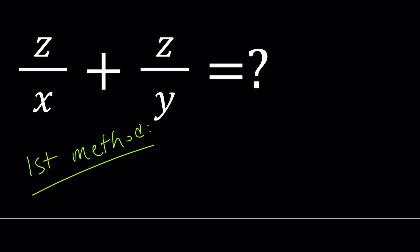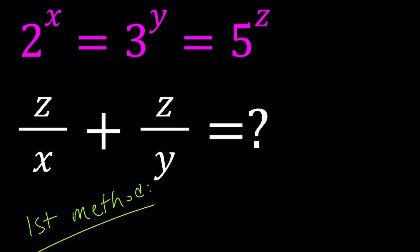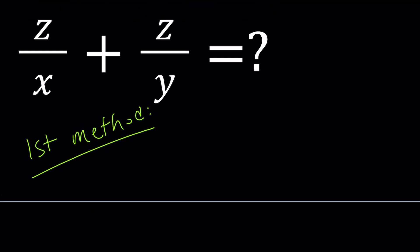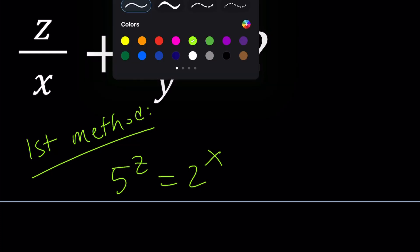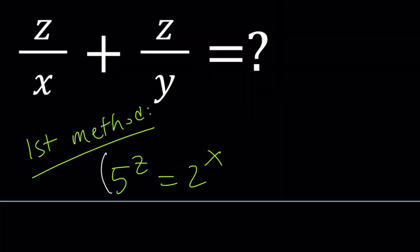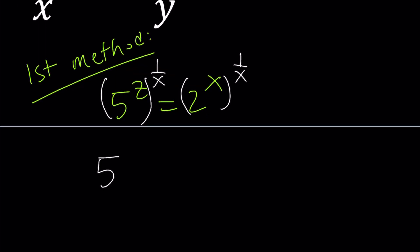So I want to get z/x. I have z here and x here, so let's put those together. 5^z = 2^x. Now if I raise both sides to the power 1/x, that's going to give me z/x here. 5^(z/x) = 2 because x cancels out.